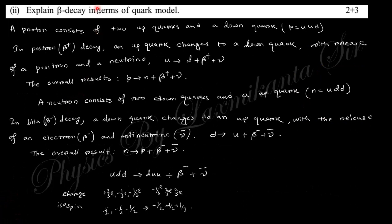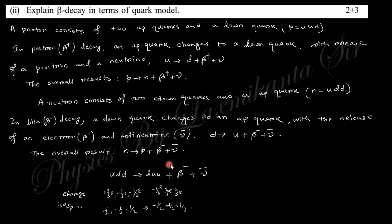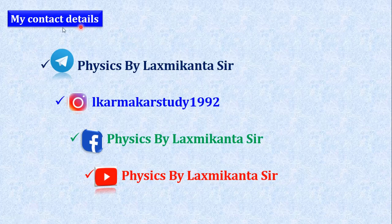Next: explain beta decay in terms of the quark model. In the quark model, a neutron is represented as up-down-down (udd) and a proton as up-up-down (uud). In beta decay, a neutron converts to a proton plus an electron plus an anti-neutrino. In quark terms, a down quark converts to an up quark, changing neutron (udd) to proton (uud), with emission of an electron and anti-neutrino.